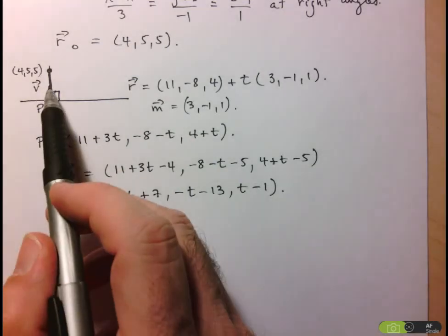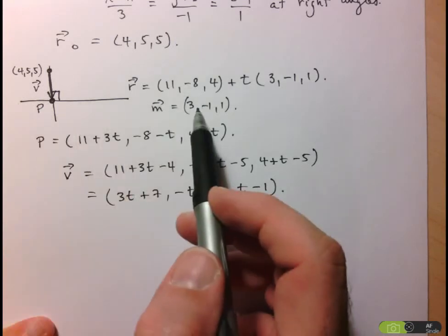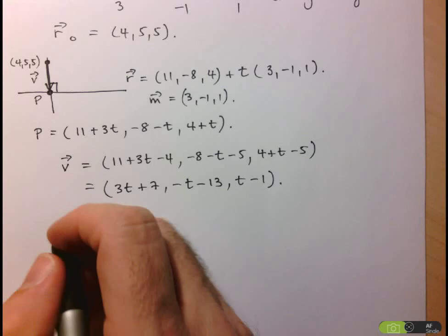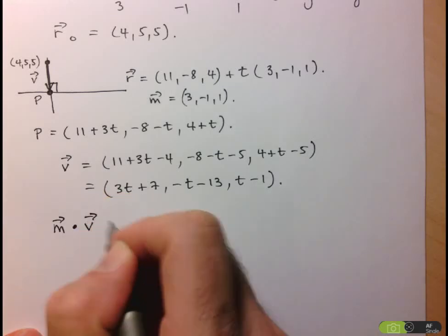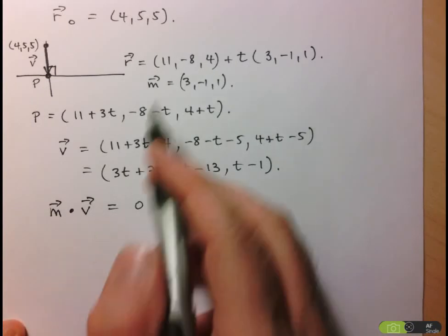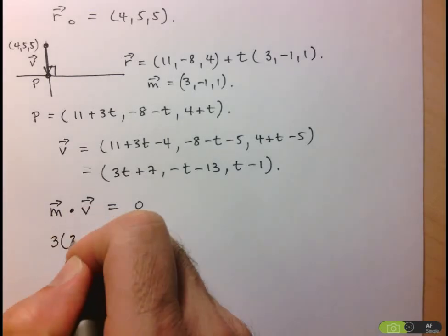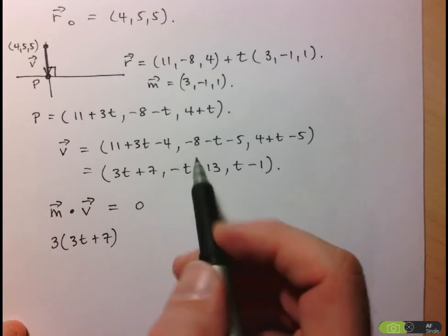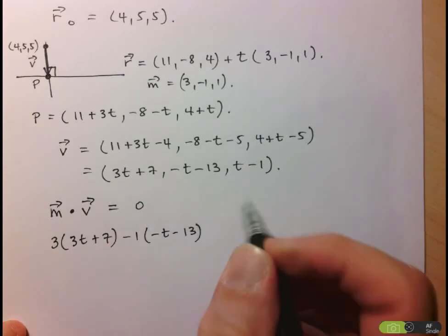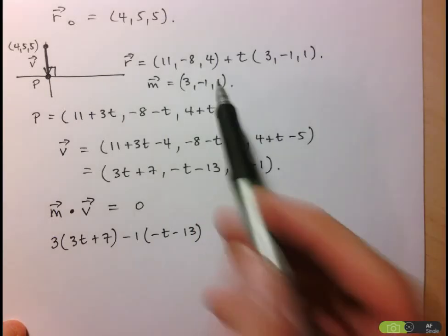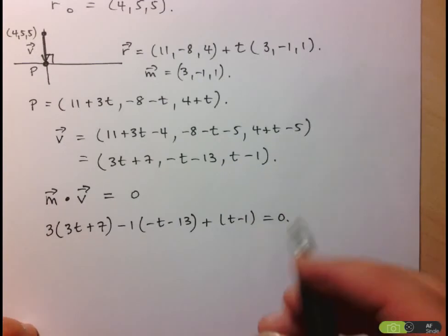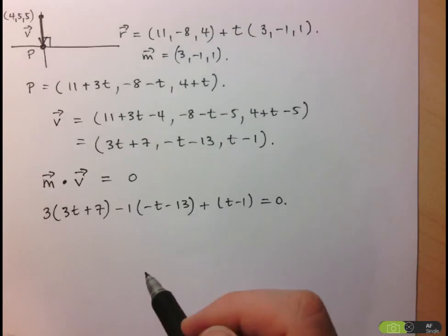Now I'll use the fact that v must be perpendicular to the direction vector m of the given line. If two vectors are perpendicular, their dot product equals zero. So m · v = 0: that's 3(3t+7) + (-1)(-t-13) + 1(t-1) = 0. This is useful because now I have an equation with only one unknown.